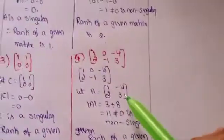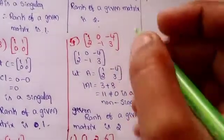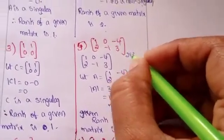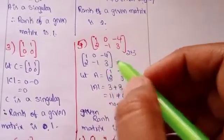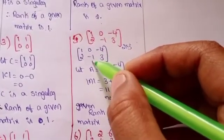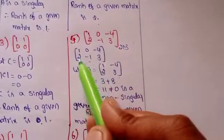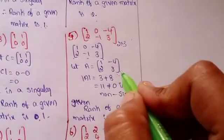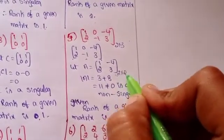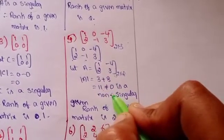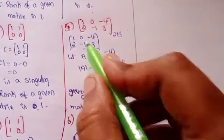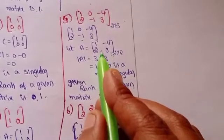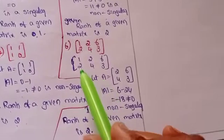For the fifth problem, the given matrix has 2 rows and 3 columns. You can remove any one column from this matrix. I remove column 2 (C2) to get the 2x2 sub-matrix: 1, minus 4, 2, 3. The determinant is 11, which is not equal to 0, so it is non-singular and the rank is 2.